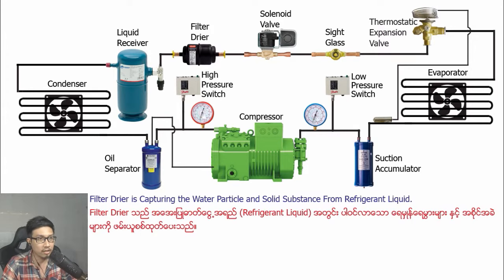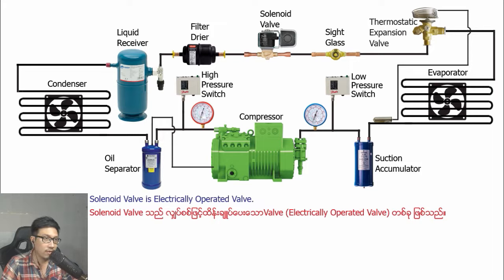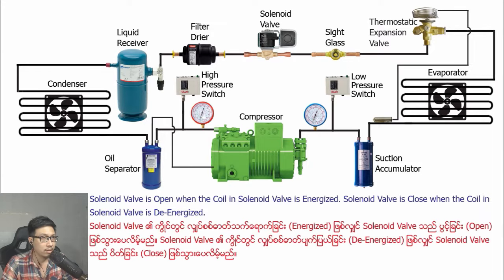The filter dryer captures water particles and solid contaminants from the refrigerant liquid. The solenoid valve is an electrically operated valve. The solenoid valve is open when the coil in the solenoid valve is energized, and closed when the coil in the solenoid valve is de-energized.